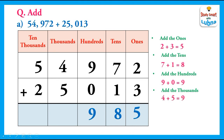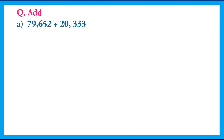4 plus 5 equals 9. Now finally we will add the digits in the ten-thousands column. In the ten-thousands column we have 5 and 2; 5 plus 2 equals 7. So after adding these five-digit numbers, we have got 79,985.